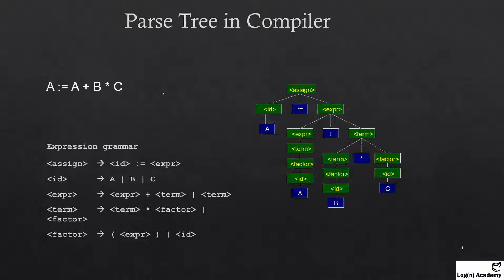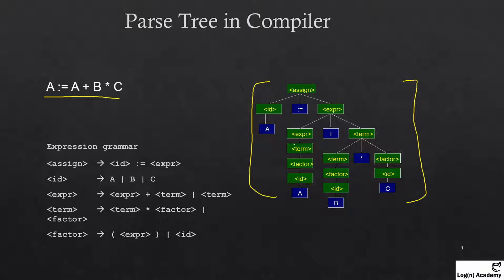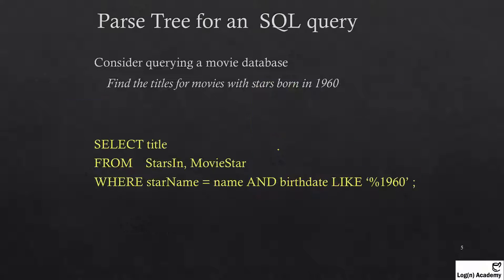Next is the parse tree in a compiler. Whenever we have an expression, the compiler creates a tree — this is an example structure showing how the compiler forms an expression tree and solves the problem. In SQL also, the SQL engine creates an expression tree using the query that we write.